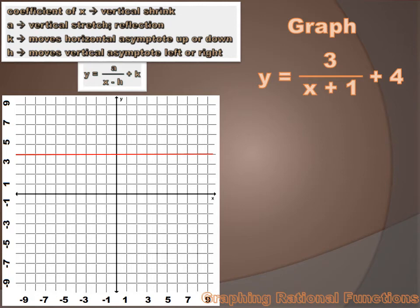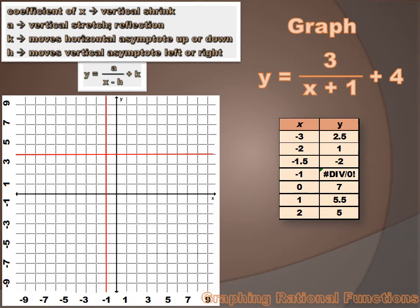Now let's draw the vertical asymptote. The vertical asymptote is the h value. In the generic equation, it's x minus h. In our actual equation, it's x plus 1, so h equals negative 1. Our vertical asymptote is at x equals minus 1. Now I want to create a table of values so I can plot some points and then draw a curve.